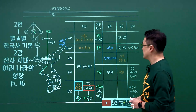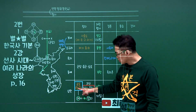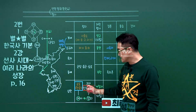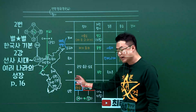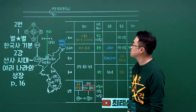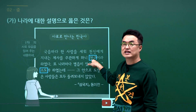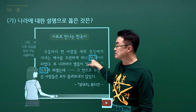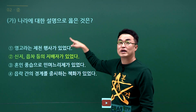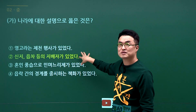여러 나라 문제입니다. 삼한에 대한 설명으로 소도와 천군이 있었고, 답지는 신지와 읍차와 같은 군장이 있다는 것입니다. 문제에서 천군이 나왔으니 삼한임을 알 수 있고, 신지읍차가 답지가 됩니다. 2번 고르시면 되겠습니다.